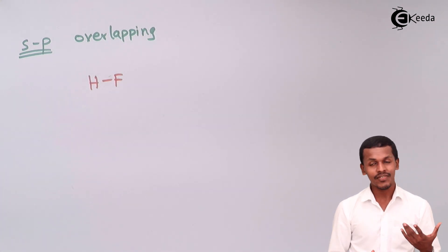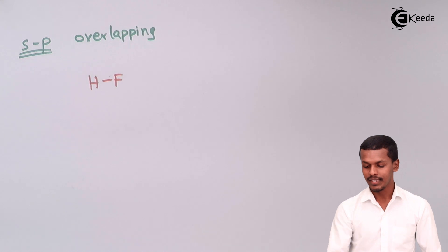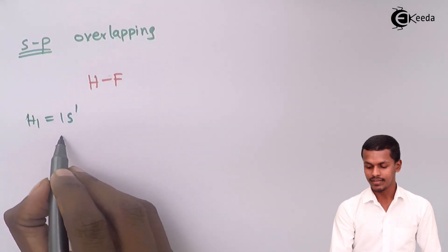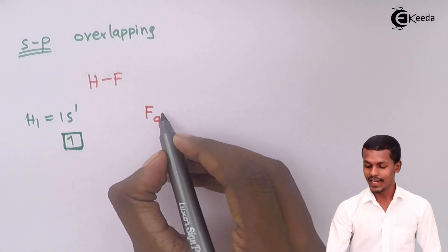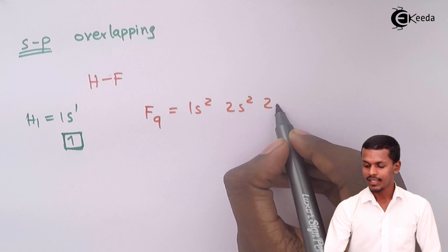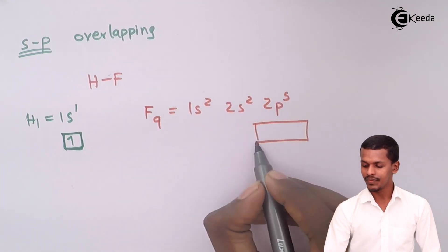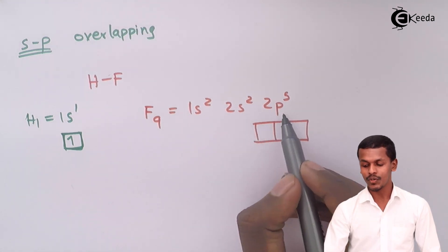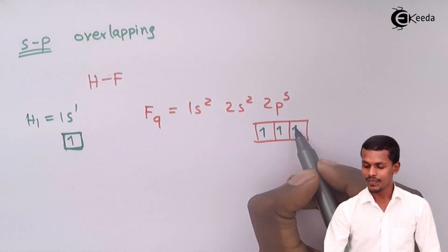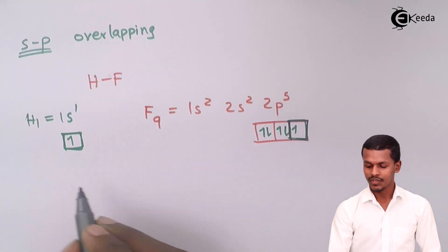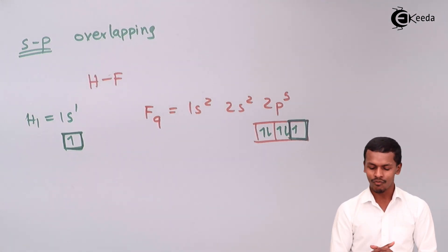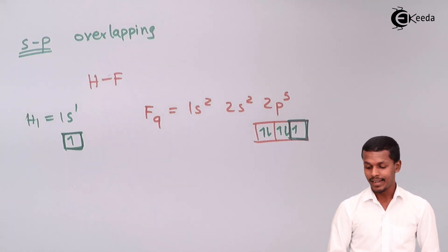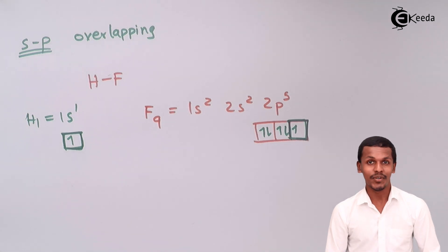In the case of HF: hydrogen consists of one electron and its atomic orbital has one unpaired electron. Fluorine consists of nine electrons (1s2, 2s2, 2p5) and has one unpaired electron in its p orbital. The energy levels of the s and p orbitals are almost the same, which is the reason they are able to form a bond.